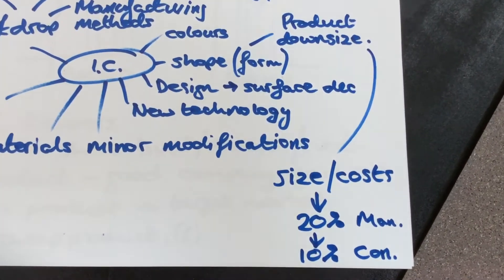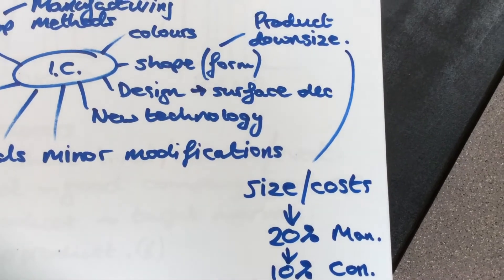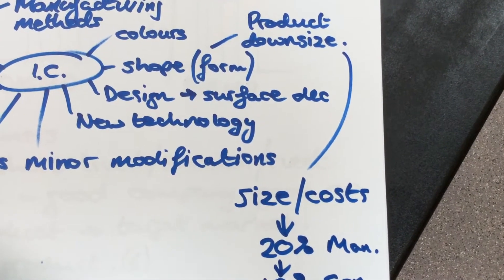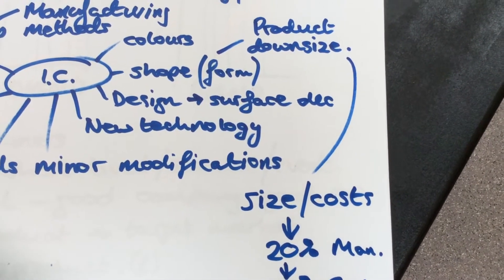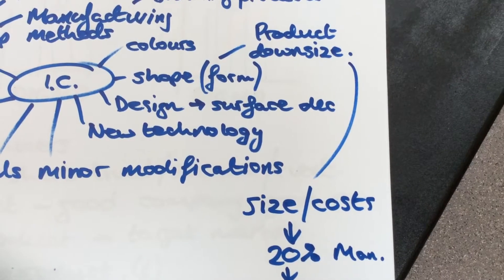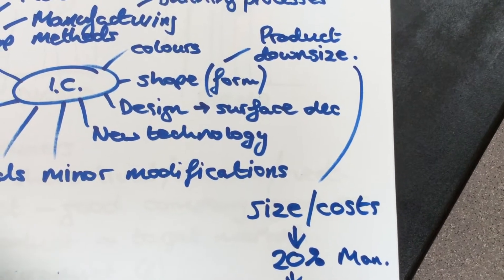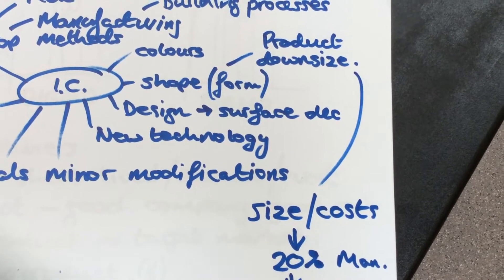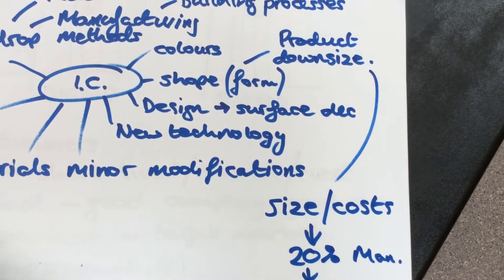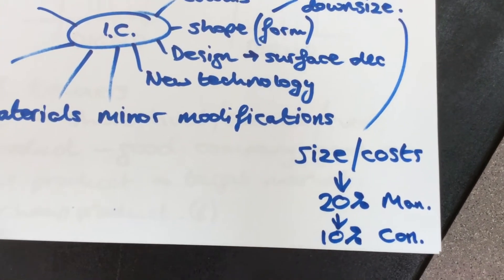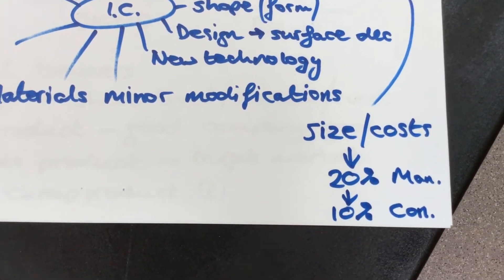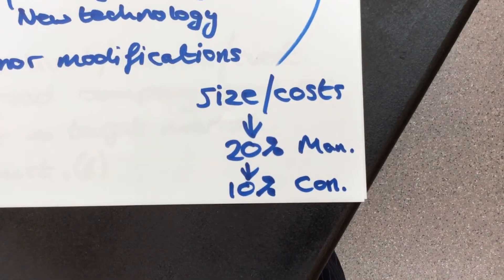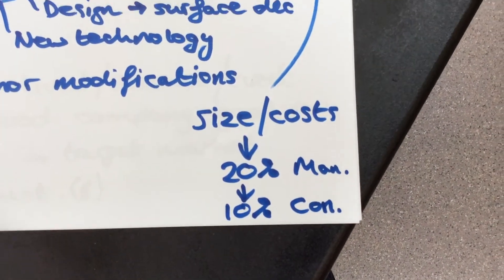First of all, let's have a look at some of the changes a manufacturer could actually take part in. They might change the colour, they might change the form — use the correct terminology please, rather than shape. They might put a surface design or decoration on, they might have some new technology in there, but they'd also have some minor modifications. All of those things, by the way, will reduce their costs.